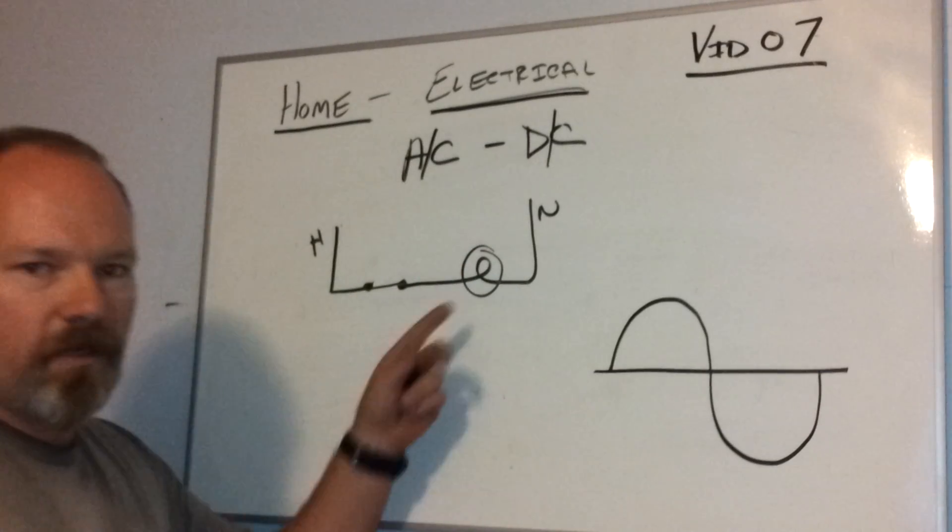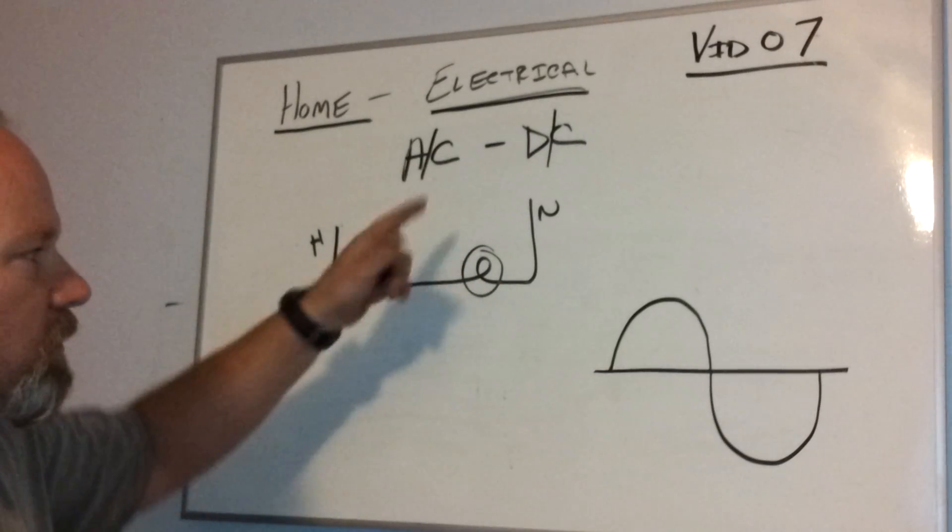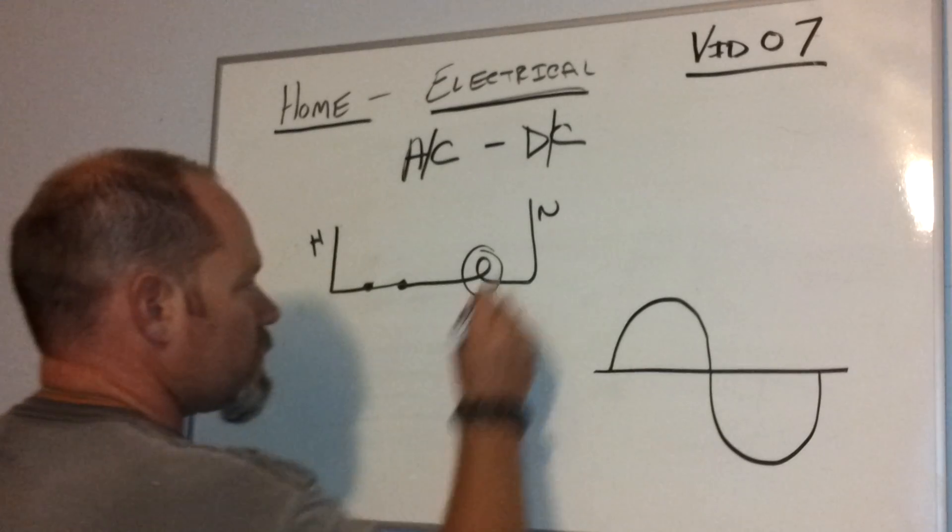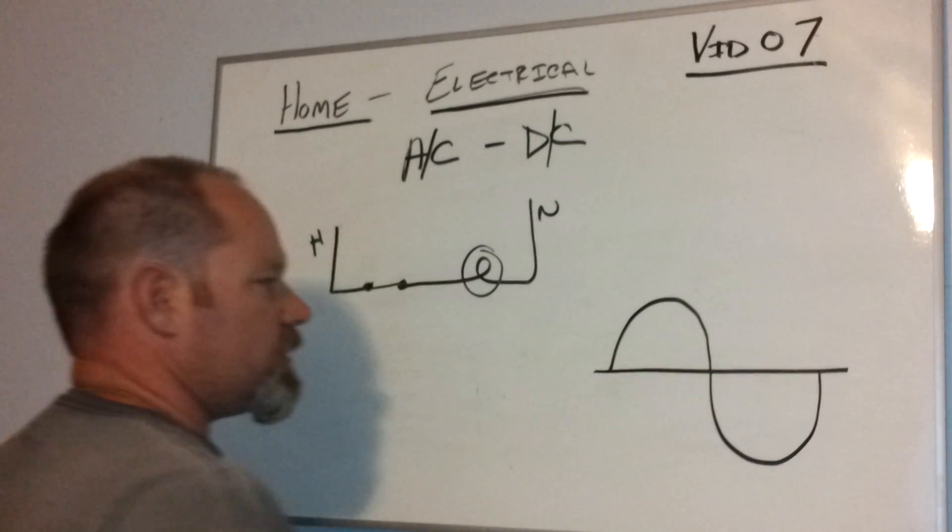And that's how that works. The electrons are flowing back and forth, and that's called alternating current. So it goes this direction here, it flows back and goes the other direction here.